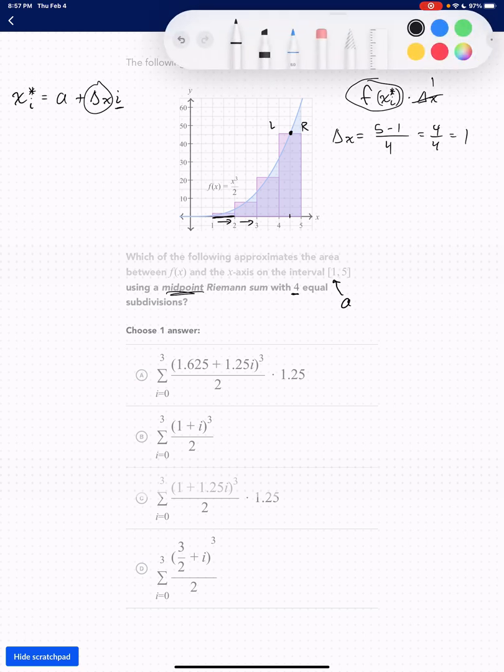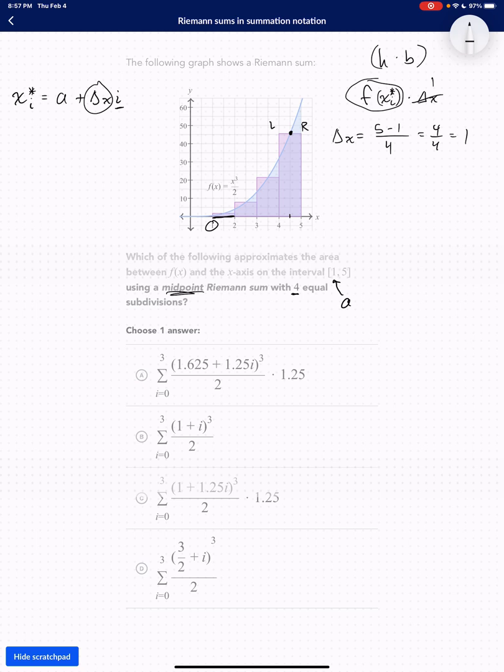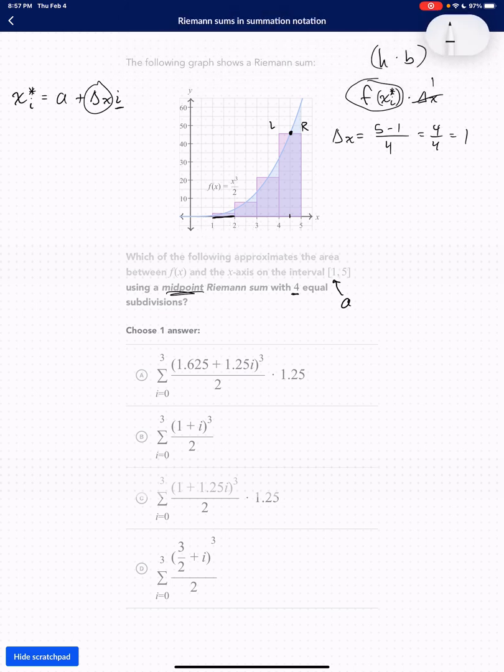So if you were starting on the left or the right, like if this was a left hand Riemann sum, we would start there, add delta x, then we would get 2, add delta x, then we would get 3, so on and so forth, and the i is what determines whether or not we add a delta x at the beginning.